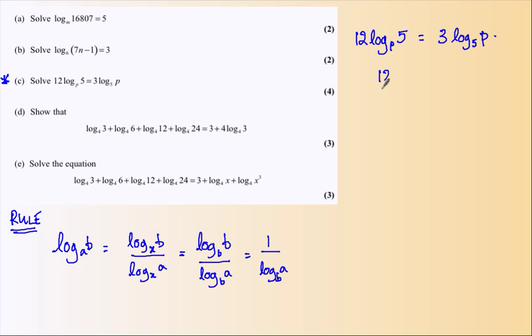So this one, 12 log to base P of 5 becomes 1 over log to base 5 of P, by this rule down here. Let me carry on. Multiply by log of P, we get log to base 5 of P squared. Divide by 3 both sides, 12 divided by 3, that's 4.